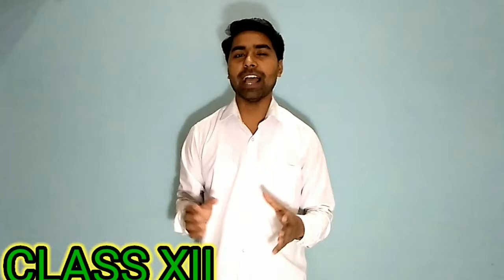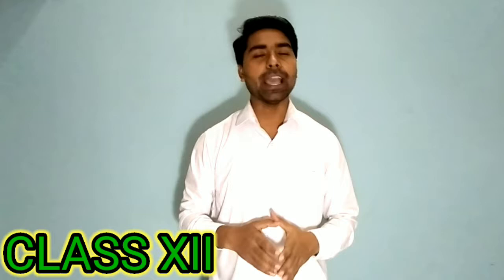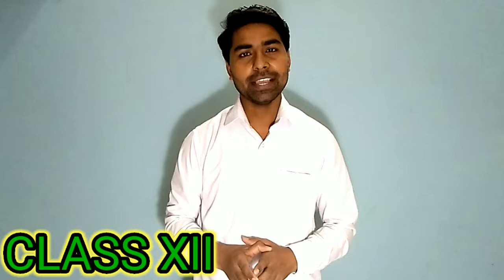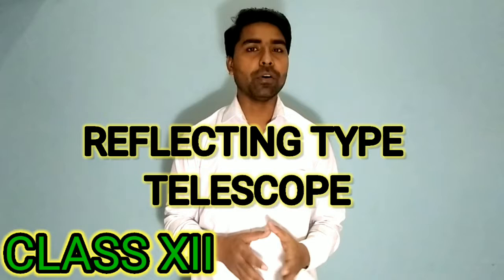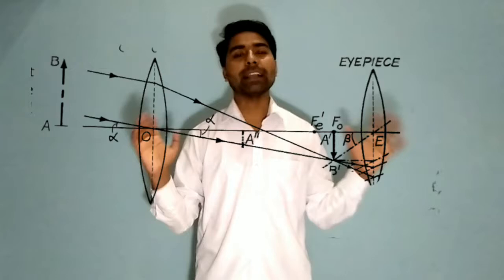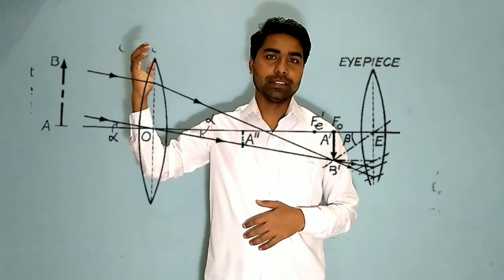Welcome back, Class 12. In this lecture, we will continue from the previous lectures where we discussed optical instruments, especially the simple microscope, compound microscope, and astronomical telescope. I told you that the astronomical telescope is of two types: one is the refracting type and the second is the reflecting type. Before going to the next topic, I want to discuss the refracting type telescope.